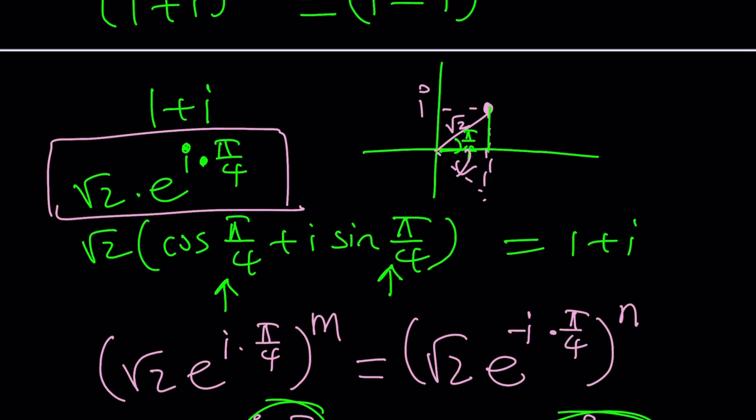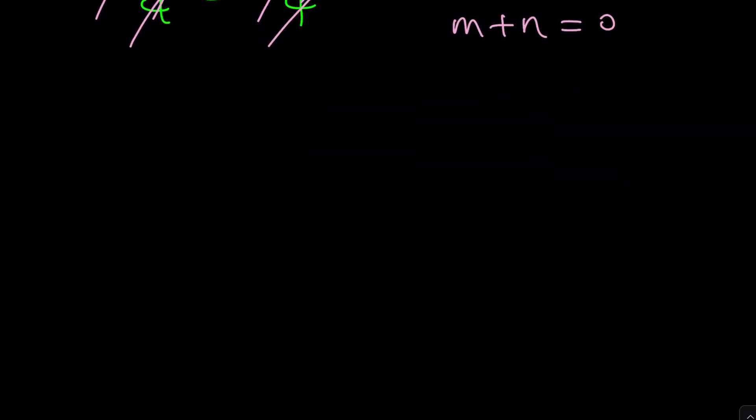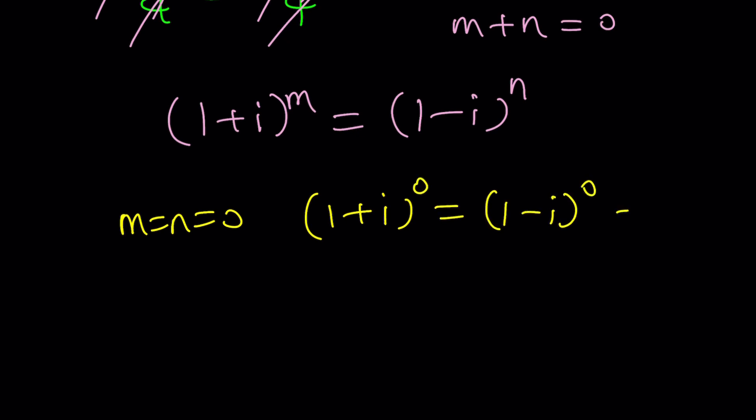Ta-da! Did we just solve the problem? Well, of course, it does solve the problem, but only partially. Why? Obviously, you knew that, right? I mean, come on. There's a trivial solution. If m and n are both 0, then we get 1 plus i to the power 0 equals 1 minus i to the power 0 because they're both equal to 1. Come on. There's nothing interesting about it. So let's make it more interesting.